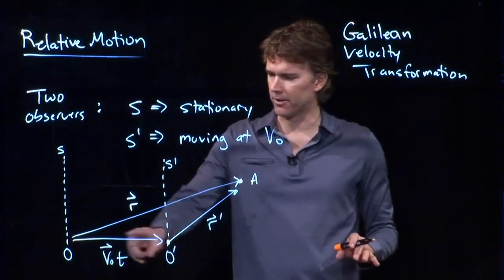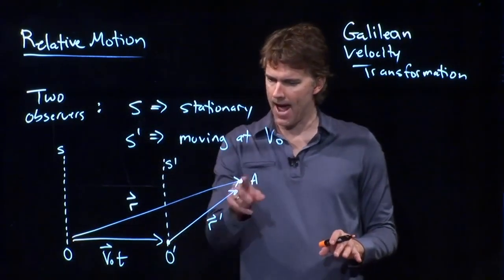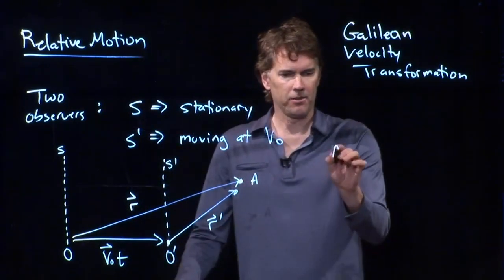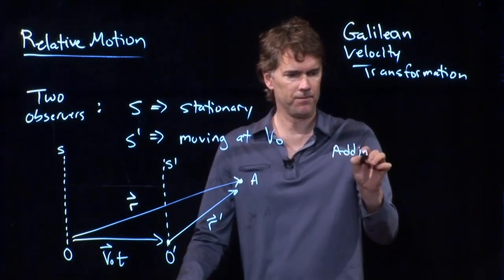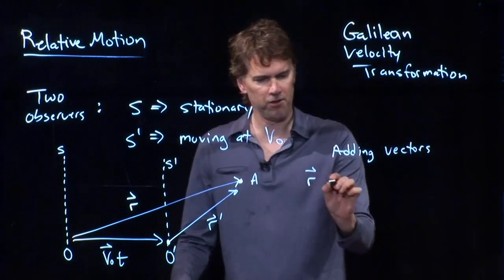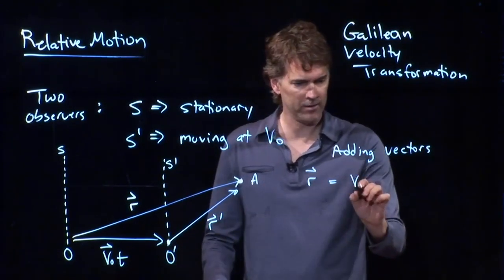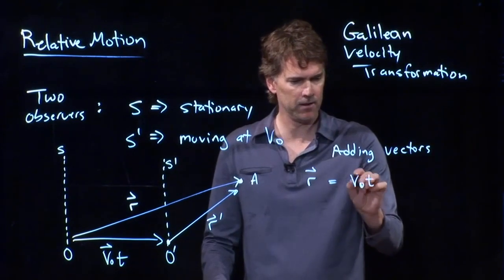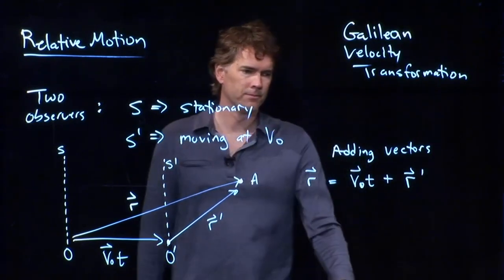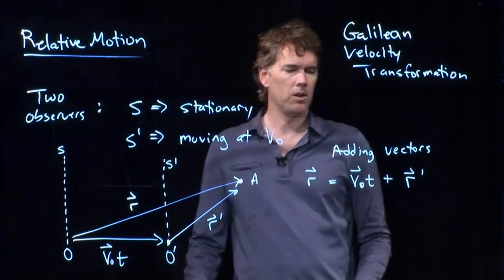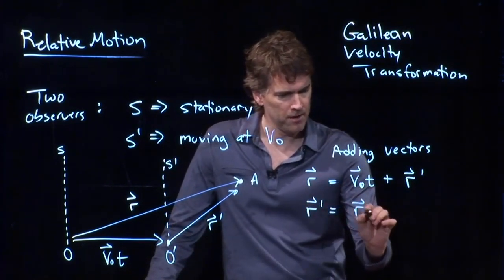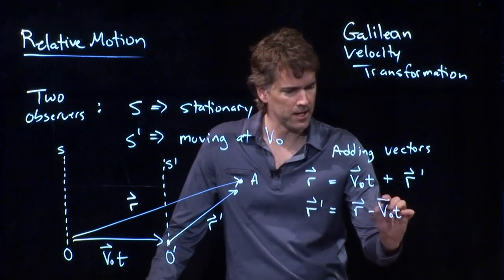It looks like if I take this vector, V naught T, and I add R prime, I'm going to get the sum of the two, which is R. And that's exactly what we do. R is just the sum of V naught T plus R prime. Okay? And now you can rewrite this for R prime if you're interested. R prime equals R minus V naught T.